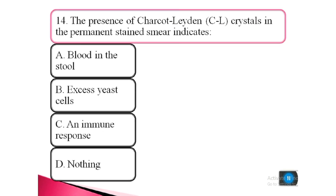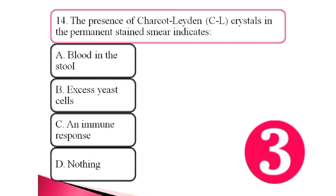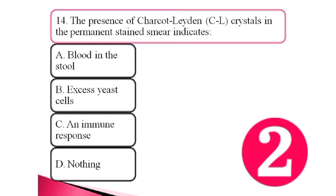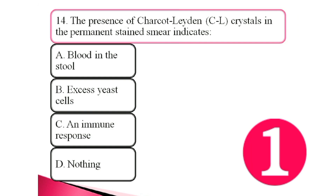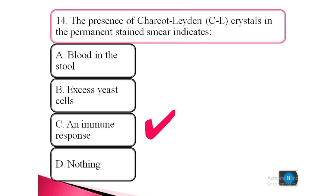Question 14. The presence of Charcot-Leyden crystals in a permanent stained smear indicates: a. blood in the stool, b. eosinophil cell, c. an immune response, d. nothing. The answer is c. an immune response.